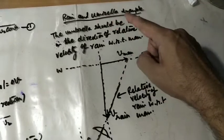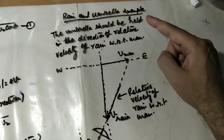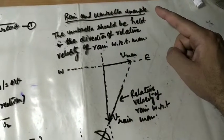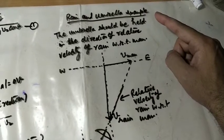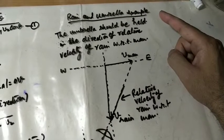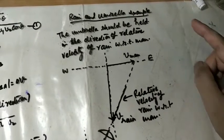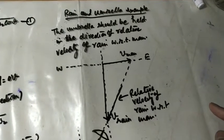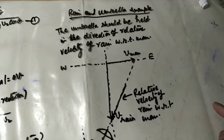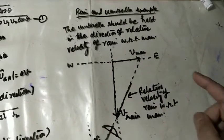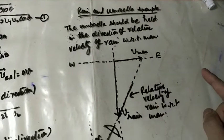Now let us understand example of rain and umbrella. When you are standing in rains, you should hold umbrella in the direction of relative velocity of rain with respect to man. I am taking a simple example.